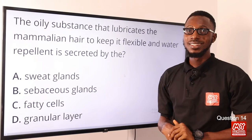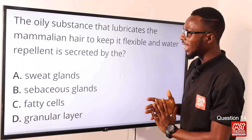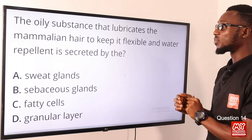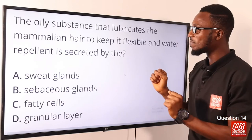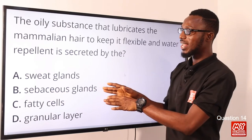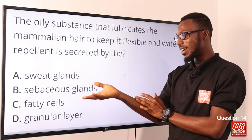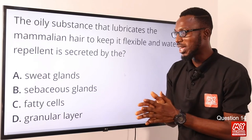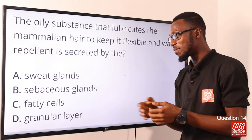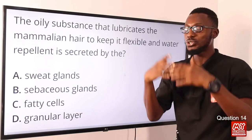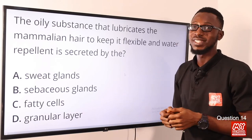Question 14: The oily substance — that is the sebum — that lubricates mammalian hair to keep it flexible, water repellent, and to keep out dust and microbes is secreted by the sebaceous gland. The sweat gland produces sweat. Fatty cells are responsible for food storage and insulation. The granular layer consists of living cells constantly pushed up from the Malpighian layer. The correct option is option B, the sebaceous gland.